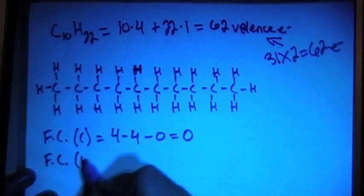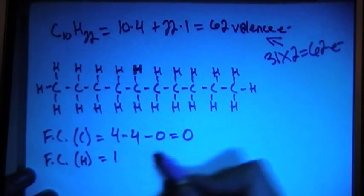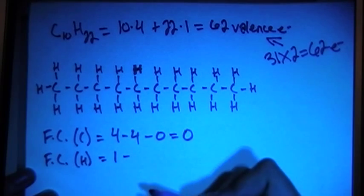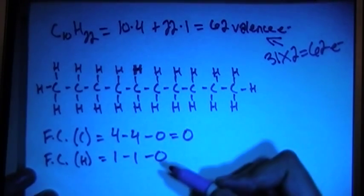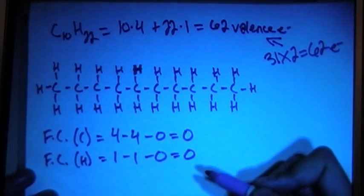Now we can check the formal charge on the hydrogens, and that's 1 valence brought in for each hydrogen, minus the number of bonds for each one, which is 1, minus 0 non-bonding electrons again, and that's also going to be a 0 formal charge.